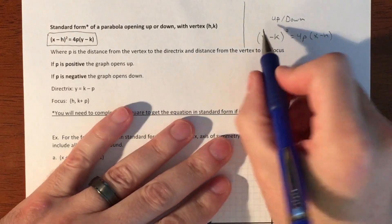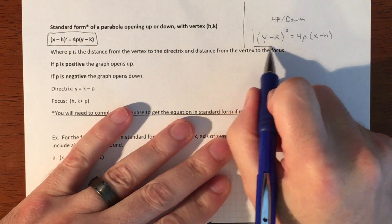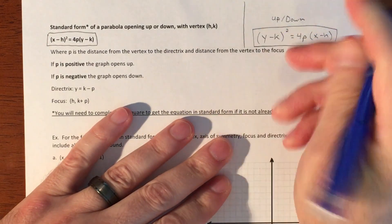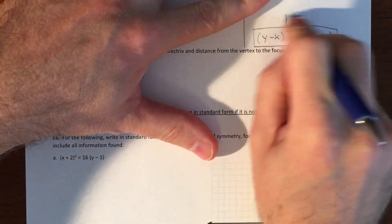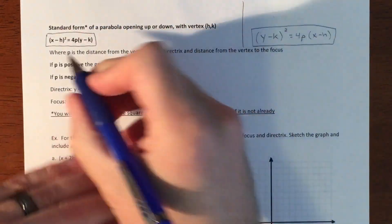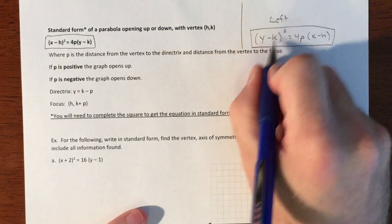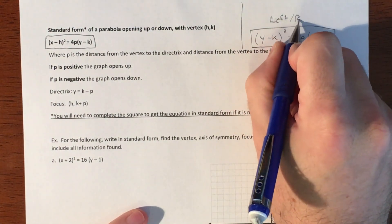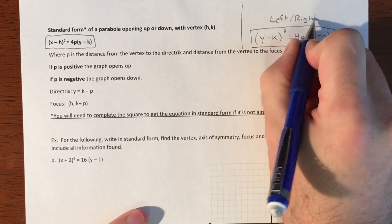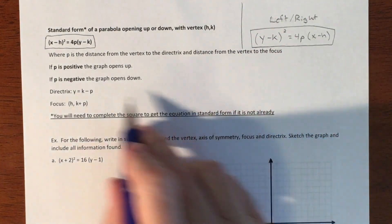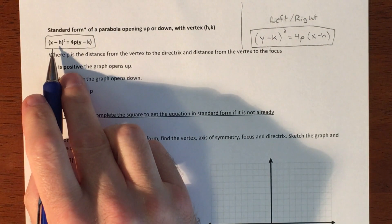If you're squaring the x, that's going to be an up and down parabola. If you are squaring the y, it's going to be left and right.